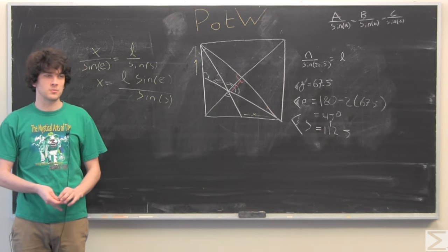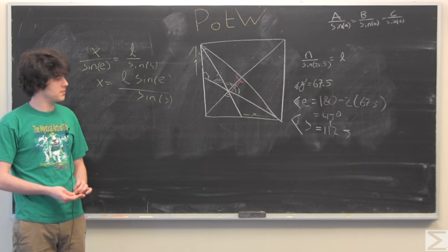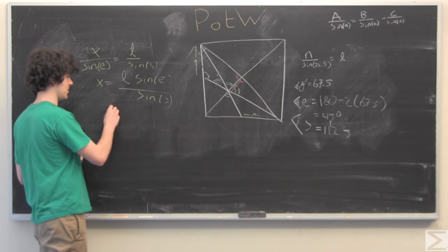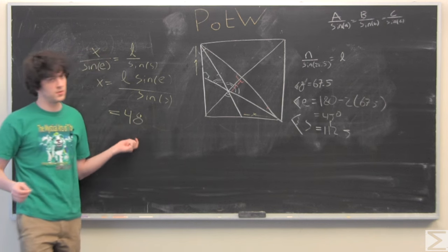I believe in our problem this week, we were given N was a length 24. So plugging and chugging, that will give us X equals 48 units.